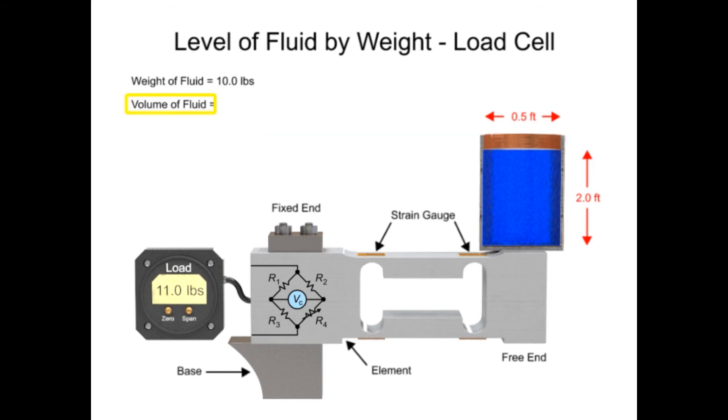The volume of the fluid is then derived by dividing the fluid weight by the density of the fluid. The level of the fluid is finally calculated by dividing the volume of the fluid by the surface area.